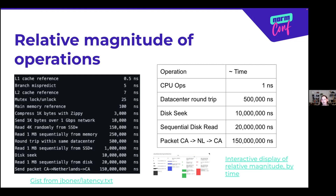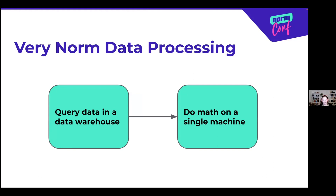So let's start with some very normal data processing. If you work at a company, this means you first query data that lives in a data warehouse somewhere — data spread across a few servers, maybe different tables, maybe a large amount of data. Then after some querying, you aggregate it to a point where you'll do math on a single machine — maybe your laptop, maybe in the data warehouse or in the cloud. I'm going to talk about querying data in the data warehouse and the implications there.